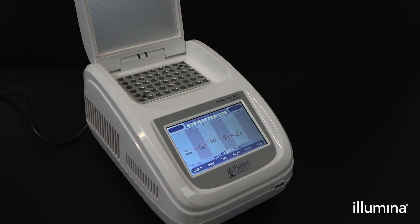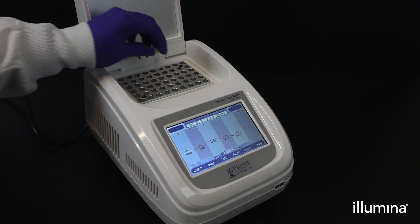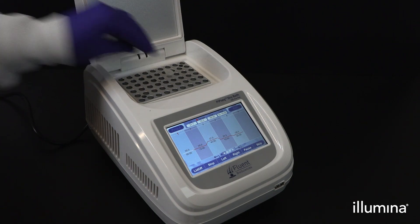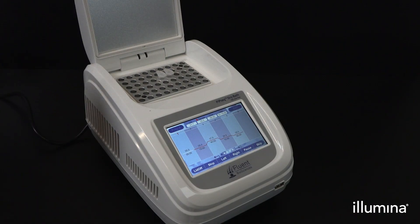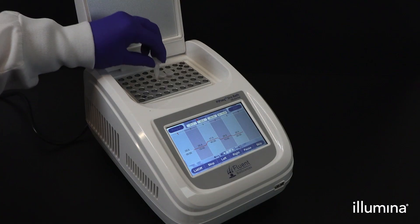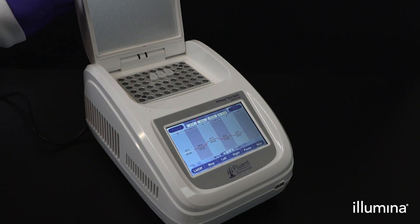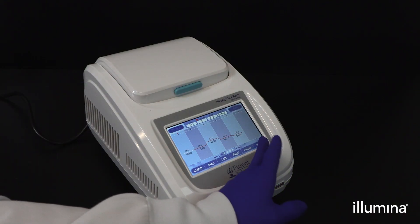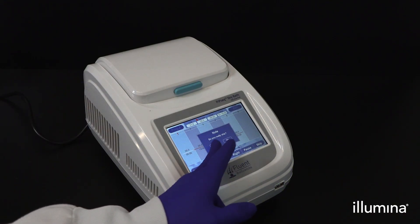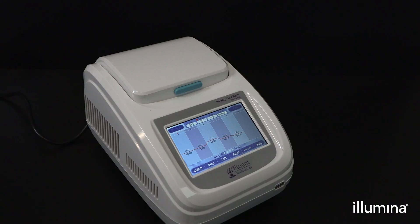Verify that the pip-seq dry bath is preheated to the appropriate temperature for your sample type. Then insert the samples into the dry bath and select skip and yes to begin the lysis incubation. Please refer to the user guide for the cell and nuclei lysis temperature profiles for this step. After incubation is complete, this is the first stopping step of the workflow. Samples are stable at 20 degrees Celsius for up to 96 hours.